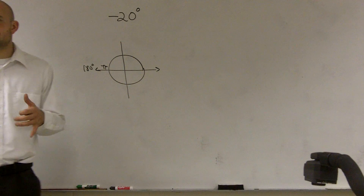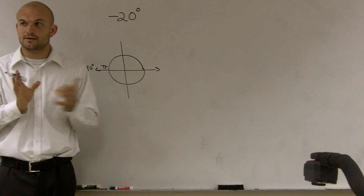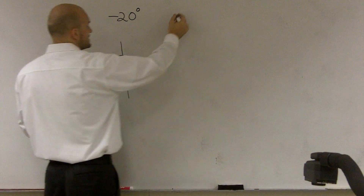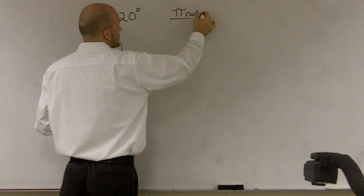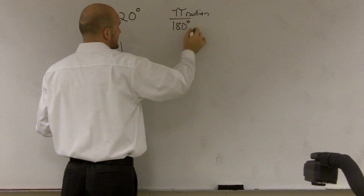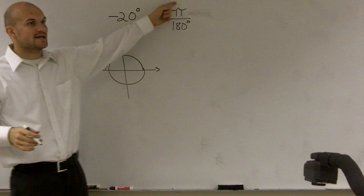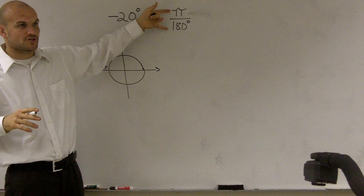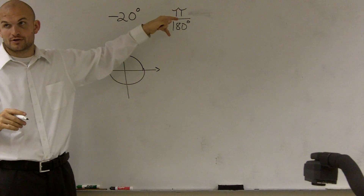So therefore, what I'm going to do is give you a ratio. A ratio, remember, is a relationship — the comparison between two quantities. And what we can say is pi radians is to 180 degrees. So you can say 180 degrees to pi radians. Pi radians is 180 degrees.